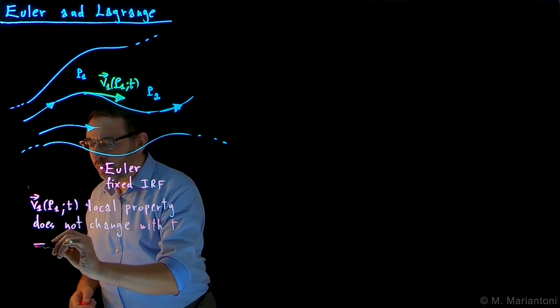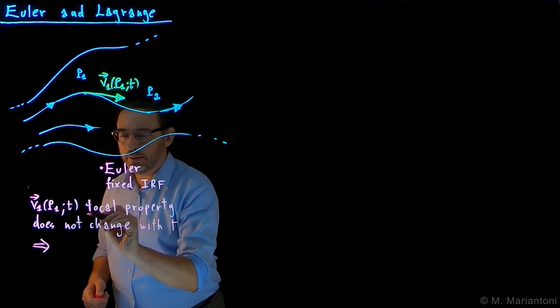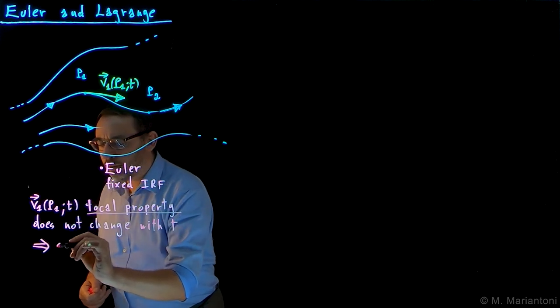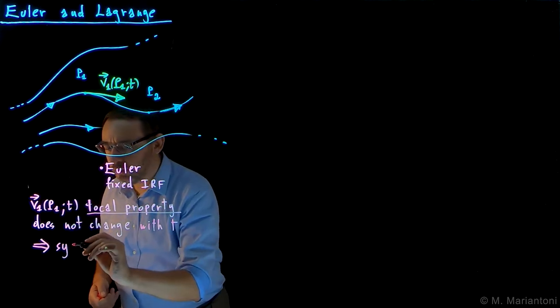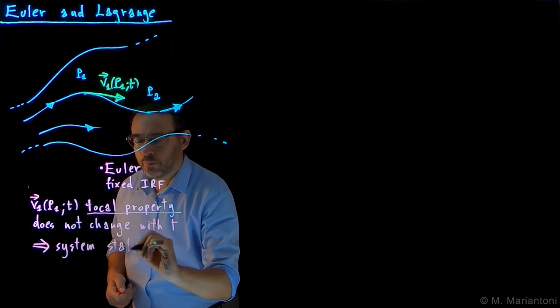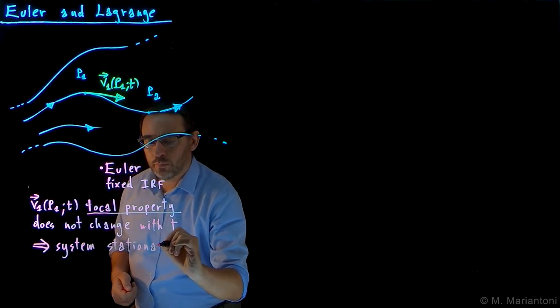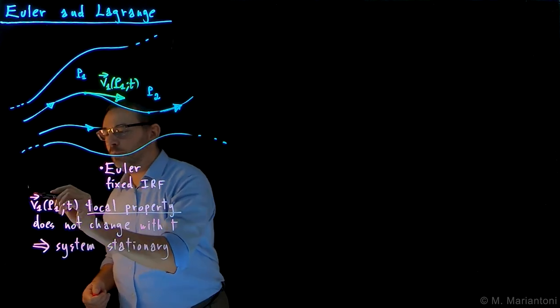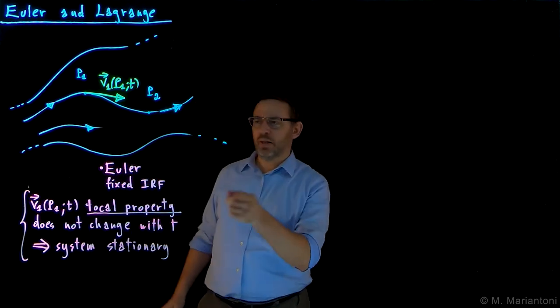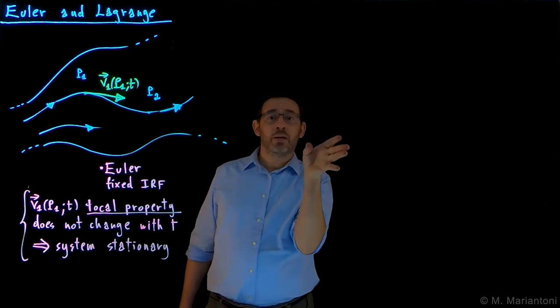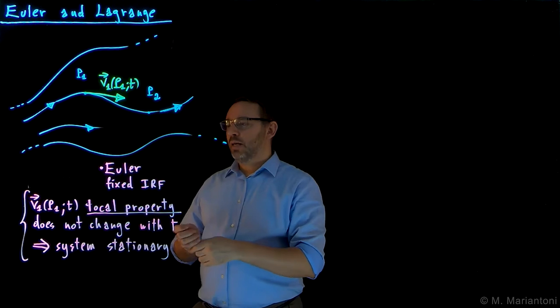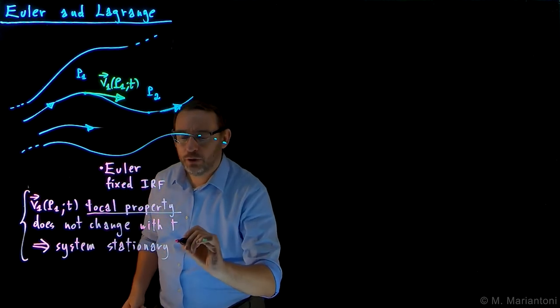Well, in this case, we say that this local property, this system, this system is stationary, which in this case is the river, is said to be stationary with respect to this local property, the velocity. Similarly, if I observe, this has to happen locally, so this means that it's locally stationary, so it can be locally, this is locally stationary.